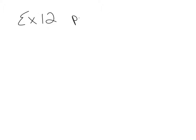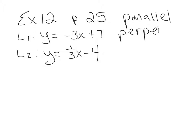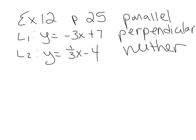Looking at example 12 on the top of page 25, the question asks us to determine if the two lines are parallel, perpendicular, or neither. Line 1 is y equals negative 3x plus 7, and line 2 is y equals 1 third x minus 4. Those are our three options: parallel, perpendicular, or neither.